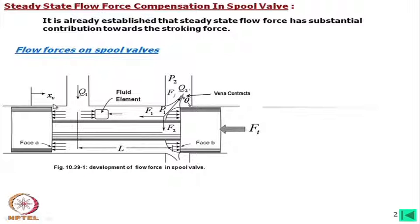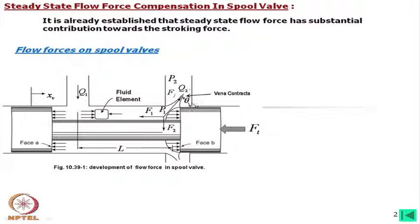For this configuration, the flow will neither touch this wall nor this land with sufficient velocity. At very low speed and some valve configurations it may touch the land or wall; otherwise it will make an angle theta to this path, and it is possible to predict this angle theoretically.